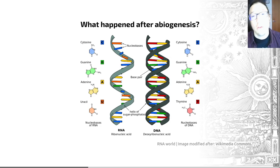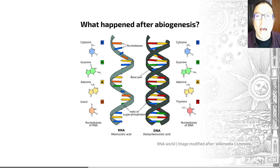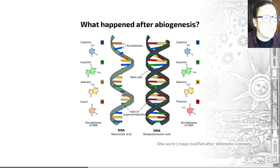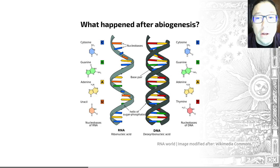Things I can tell you for sure are that life nowadays uses RNA, shown on the left-hand side of this image, and DNA, shown on the right-hand side, as informational molecules. These are long molecules that store information for living things. What happened immediately after abiogenesis is still very poorly known, but we think longer and increasing numbers of molecules were created through the evolution of early life.